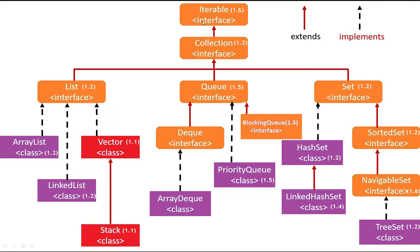Let's start one by one. Here you can see all collection and collection subclasses were introduced in the 1.2 version. But before that, before introducing this collection, we had two classes — Vector and Stack — which were introduced in Java 1.1 version. Before collection, we were simply using these Vector and Stack classes. But after collection, those two classes are considered as legacy classes.